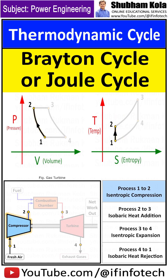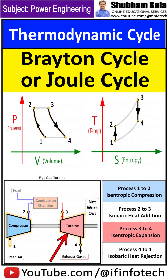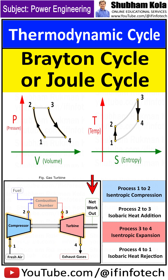During the Brayton cycle, work is done on the gas by the compressor between state 1 to 2, which is the isentropic compression process, and work is done by the gas in the turbine between state 3 to 4, which is the isentropic expansion process. The difference between work done by the gas and work done on the gas is the net work produced by the cycle, and it corresponds to the area enclosed by the cycle curve in the p-v diagram.